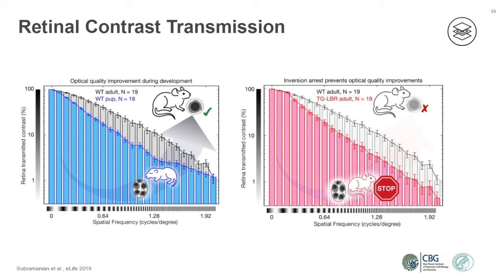This correlation can be causally established by using the mouse model in which the lamin-B receptor is overexpressed, such that upon arresting the development of the nuclear architecture, we can also arrest the optical development of the retina. In other words, nuclear inversion actually imparts this increased or enhanced optical quality to the retina.